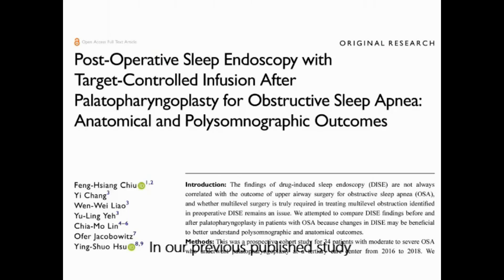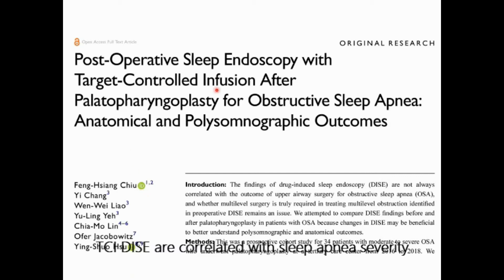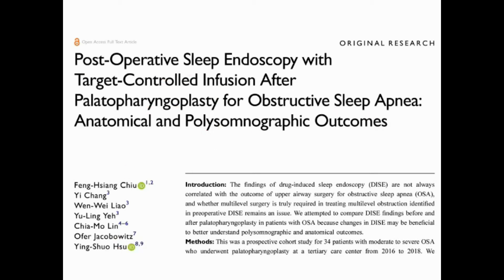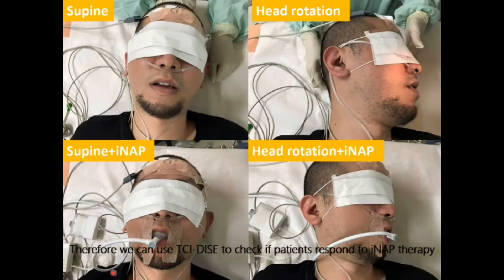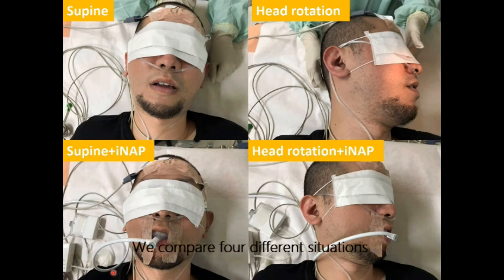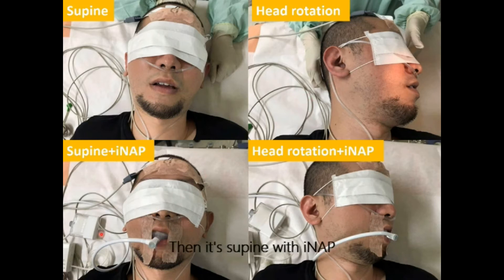In our previously published study, we found that TCI DISE is correlated with the patient's sleep apnea severity and postoperative surgical outcomes. Therefore, we can use TCI DISE to check if patients respond to INAP therapy. We compared four different situations: first, supine; then head rotation; then supine with INAP; and then head rotation with INAP.